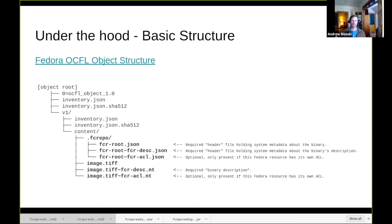OCFL defines that in each version you have its own inventory file and its own digest file for that inventory. Then there is a directory called 'content' that contains the actual substance of your object. The files shown in bold are Fedora files — the content of your Fedora repository. The other items are the OCFL-defined files. There are three different types of files you'll come across.